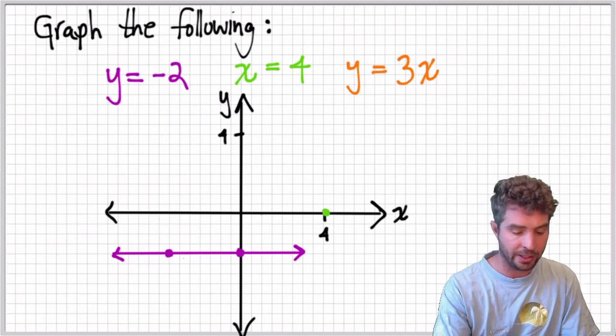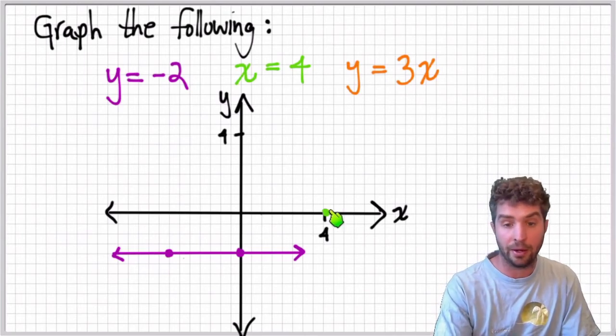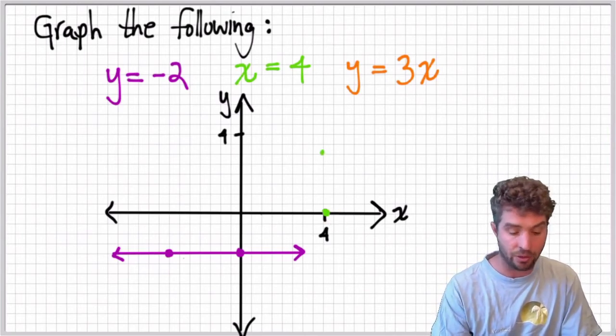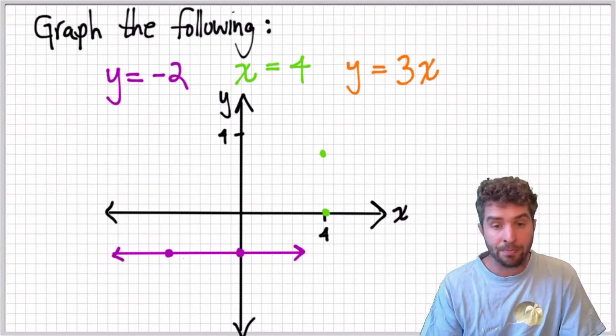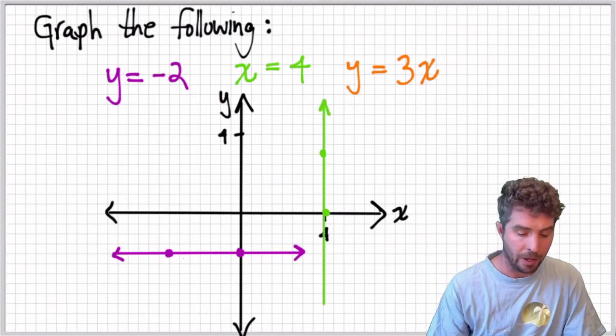Similarly, if I have x equals 4, I can draw that point on the x-axis. And then I can draw any other point with the coordinate x equals 4. And that's my vertical line.